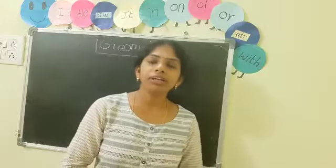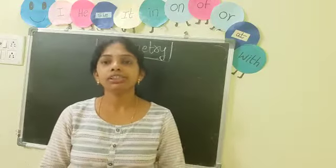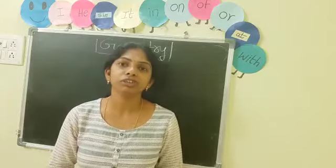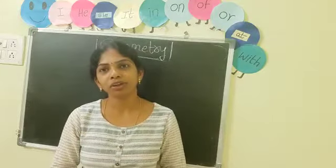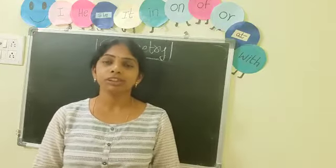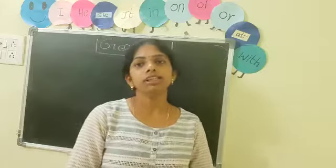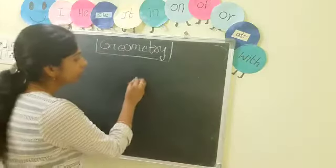We have already learnt about the solid shapes. What are solid shapes, children? Cube, cuboid, cone, sphere — these all are solid shapes.